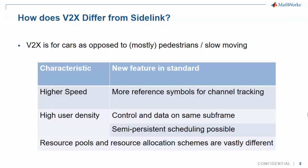V2X builds on the principle of the original Sidelink specifications, but there are obvious differences due to vehicular application. Higher speed means more reference symbols are needed for accurate channel tracking. Higher user density is accommodated by scheduling control and data on the same subframe, which also provides shorter latency. Moreover, resource pools and allocation are vastly different.